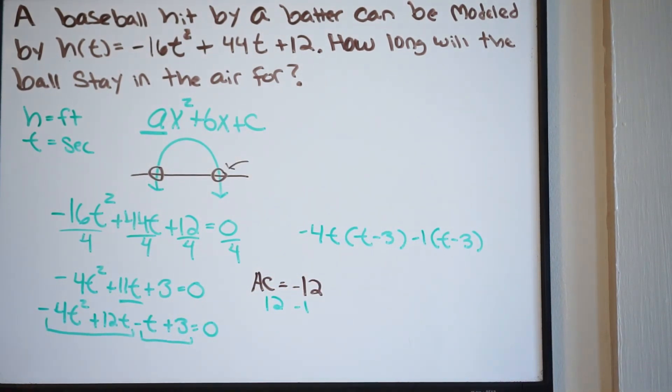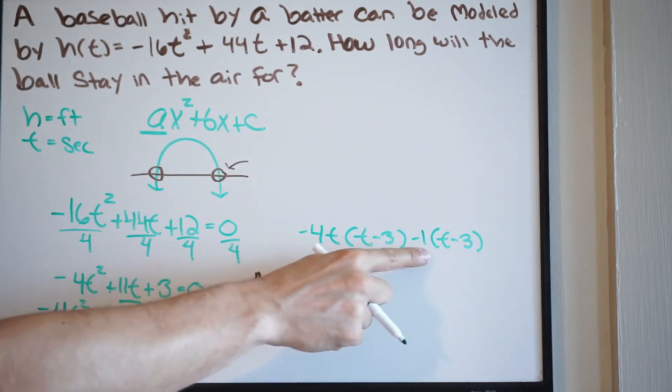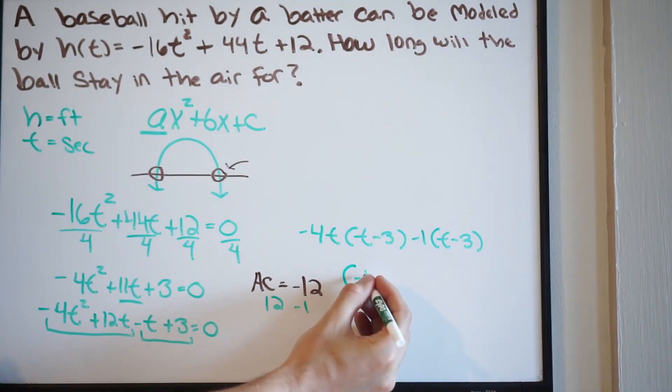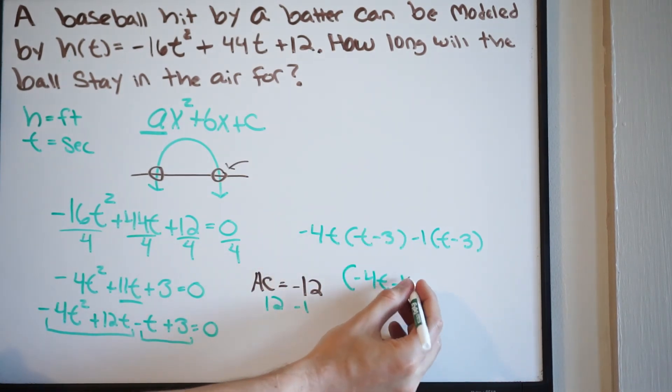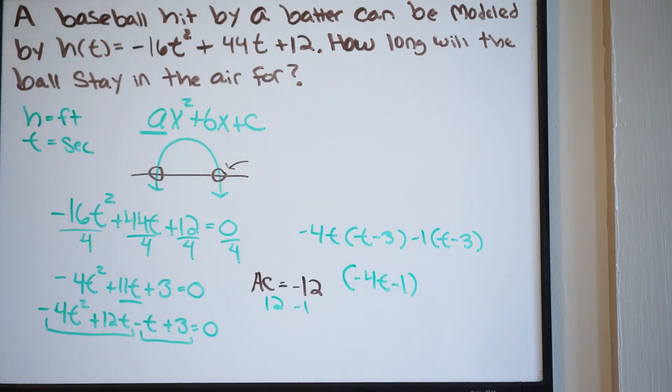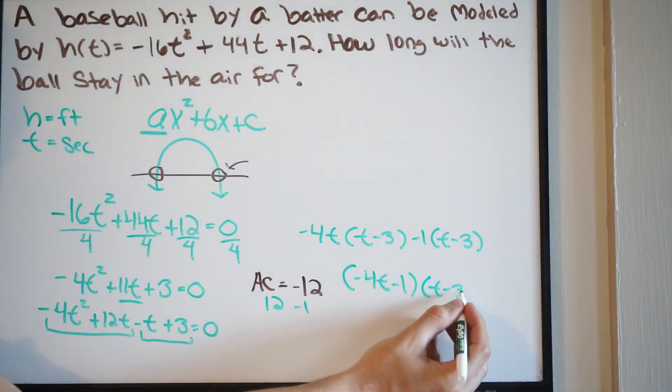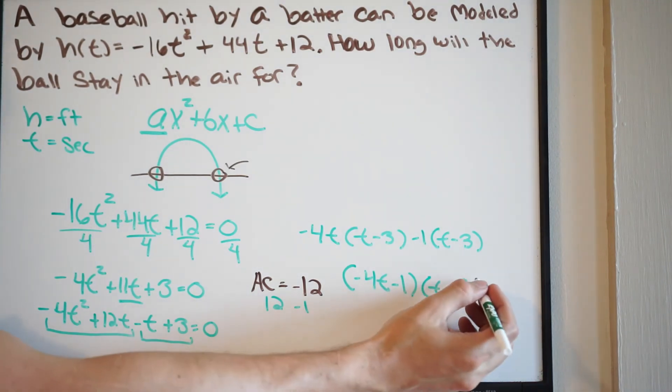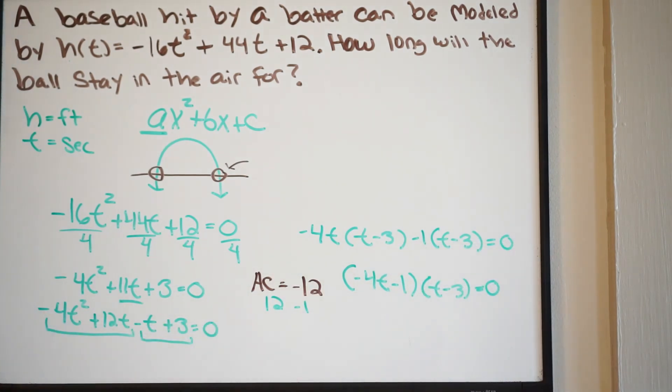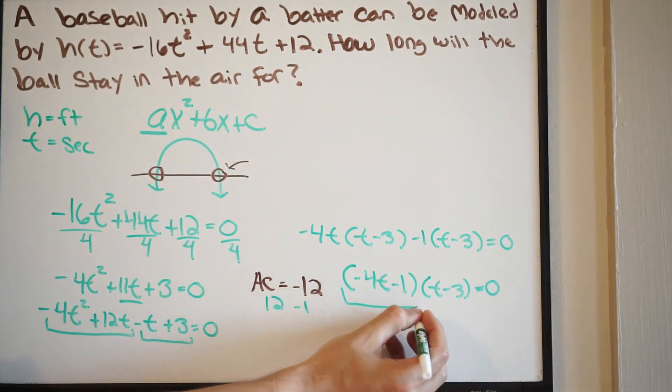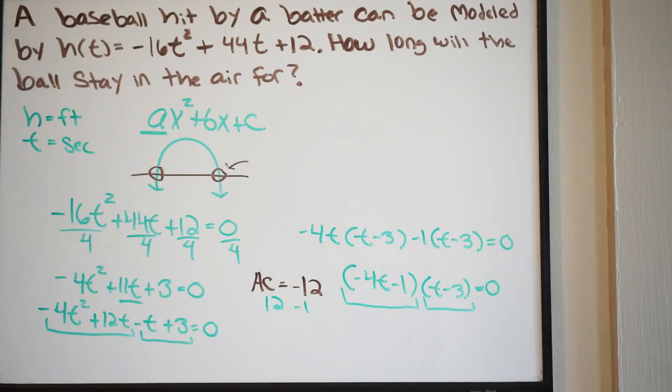So at this point, we're just going to go ahead and write our outside terms together. So for example, we're going to write it as negative 4t and then minus 1. And then write your common factor one time, t minus 3. Again, this is all going to be equal to 0. So what we want to do now is, well, we just want to solve. So we take each one of our factors and we solve them by setting them both equal to 0. So let's start with this one.